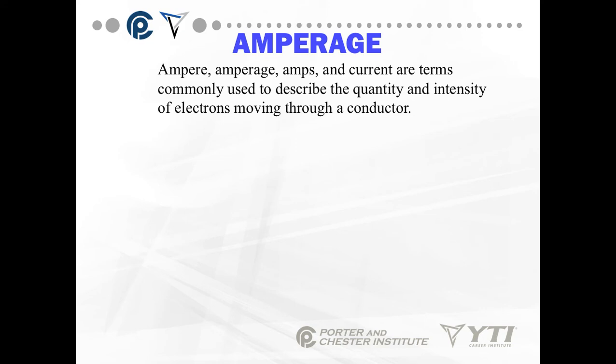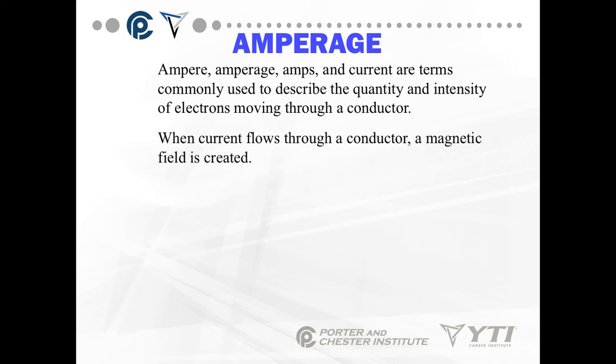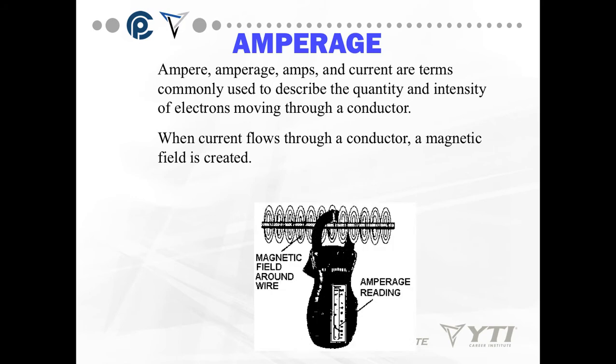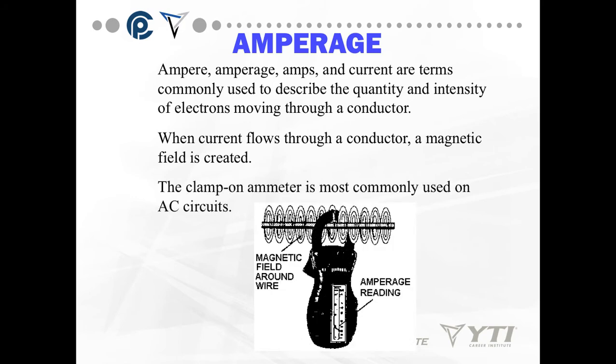Amperage is another measure of electricity. Amper, amperage, amps, and current are terms commonly used to describe the quantity and intensity of electrons moving through the conductor. When current flows through a conductor, a magnetic field is created. The clamp-on ammeter is the most commonly used on AC circuits — it measures the strength of that magnetic field and produces an amp reading.